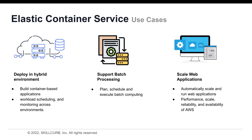Let's take a look at some of the use cases of ECS. ECS can be deployed in a hybrid environment. You can build container-based applications on-premises or in the cloud with Amazon ECS Anywhere and enjoy consistent tooling, management, workload scheduling, and monitoring across environments. ECS supports batch processing. You can plan, schedule, and execute batch computing workloads across the full range of AWS services, including Amazon Elastic Compute Cloud, Fargate, and Amazon EC2 Spot instances. You can also scale your web applications. ECS automatically scales and runs web applications in multiple availability zones with the performance, scale, reliability, and availability of AWS.